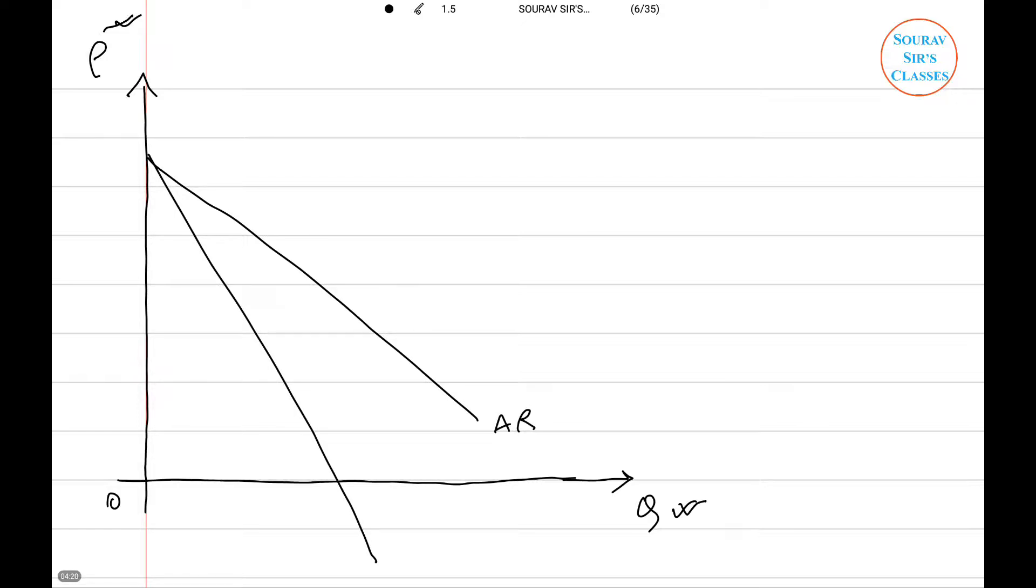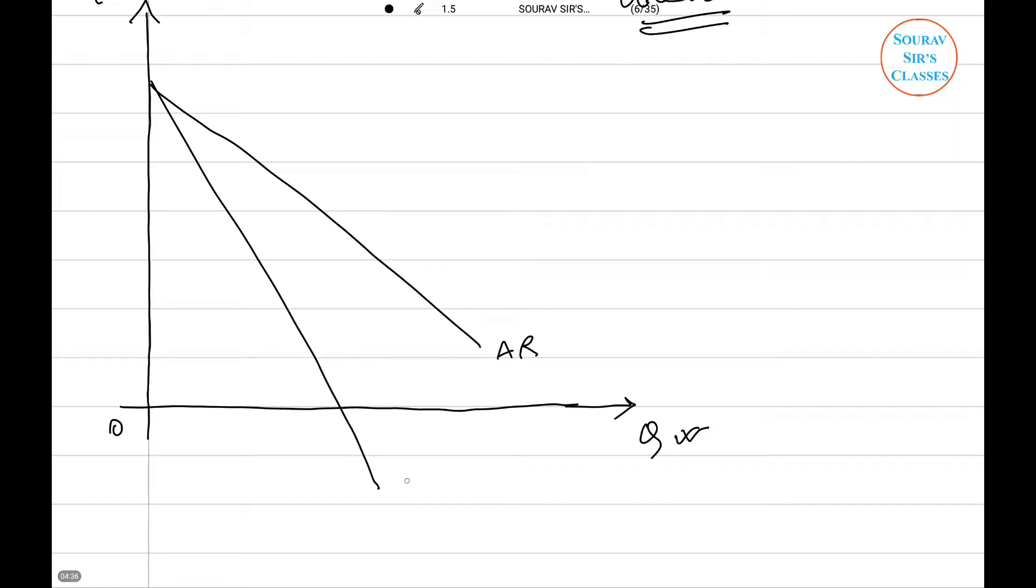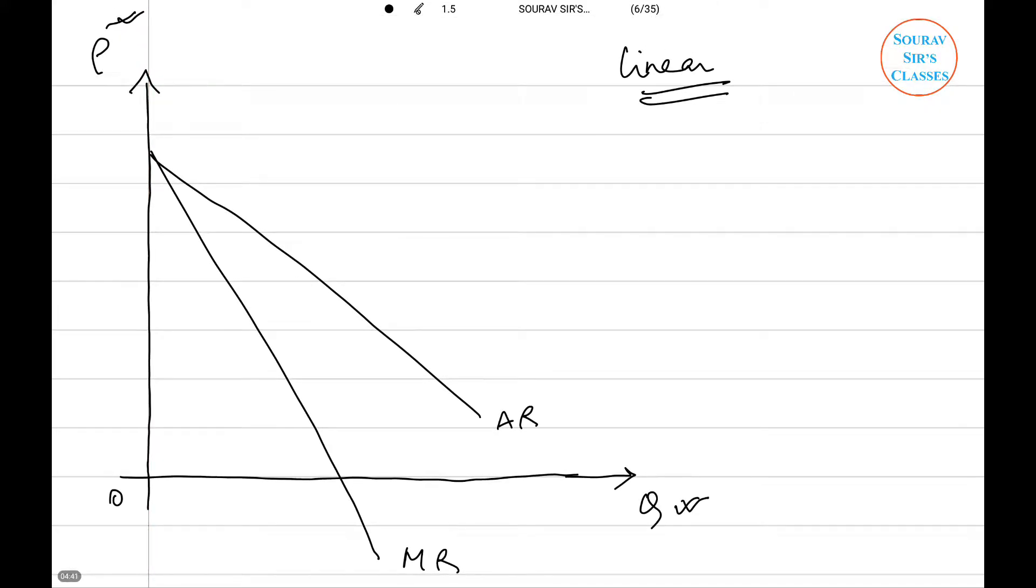I have drawn two axes where Q I'm measuring on the horizontal and P on the vertical axis. Now let us make the average revenue, this will be my marginal revenue. You know that average revenue in case of linear production function, the marginal revenue will be half of average revenue. This is valid only with linear functions.